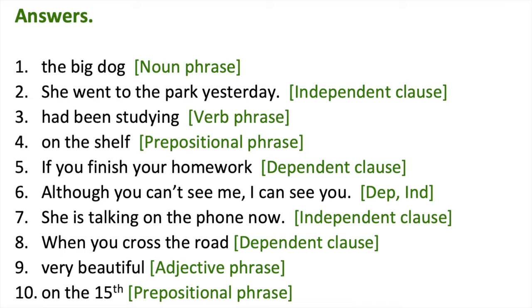Although you can't see me, I can see you. In this example, we have two types of clauses. There is a dependent clause followed by an independent clause. Remember, a dependent clause usually begins with a subordinating conjunction. In this example, the subordinating conjunction is although. A comma is used to join the dependent clause with the independent clause.